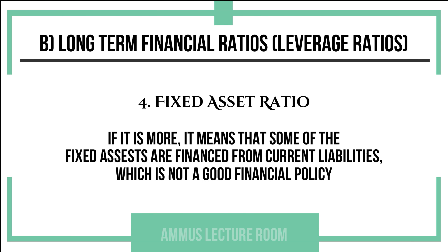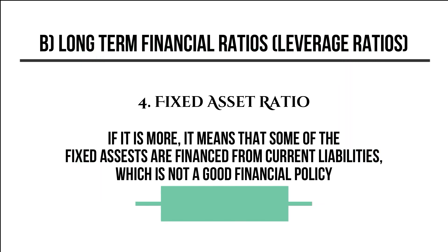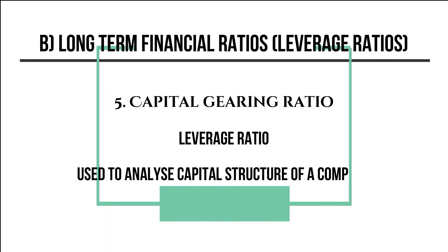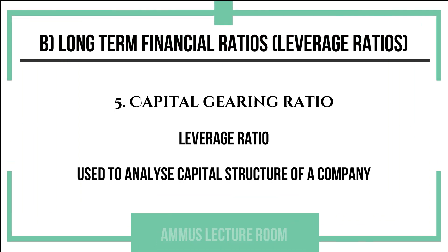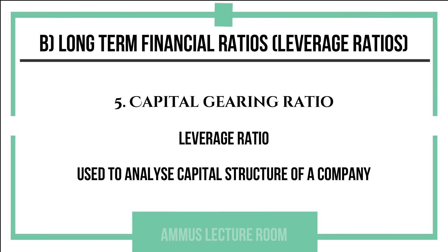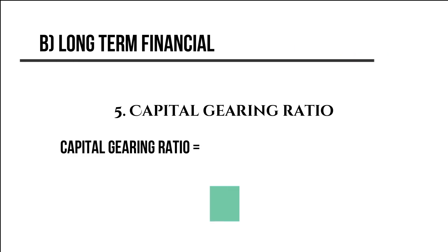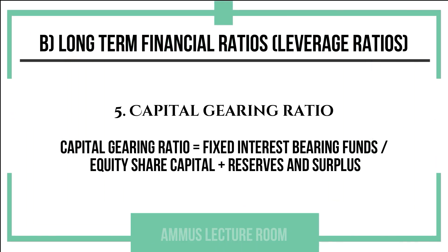The fixed asset ratio compares total fixed assets to total long-term funds. A ratio equal to or better than 1 indicates a good situation, meaning fixed assets are financed by long-term funds rather than current liabilities, which is sound financial policy.